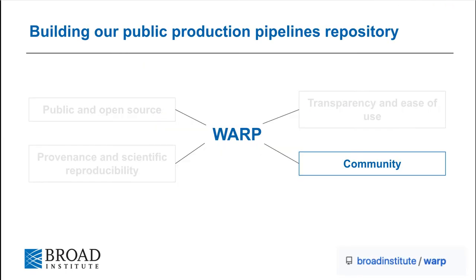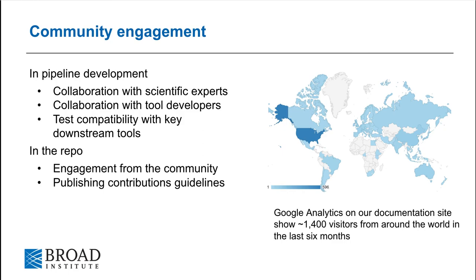Lastly, our efforts on engaging with the community. We've been working to increase our engagement with the broader community of pipeline developers and users. Each pipeline we develop is done in collaboration with a scientist or lab who is an expert in the data type, and we've worked with labs at many institutions in multiple countries. Where possible, we collaborate with tool developers to use open source tools and request features rather than build our own. Where there aren't standards and file formats, we test to confirm our outputs are compatible with popular downstream tools and published specs. As we've talked about WARP more, we've begun to receive emails, issues, pull requests, and new pipelines from folks outside of our team and the Broad. We've just published contributions guidelines for contributing to existing pipelines, including a full tutorial, and will expand this to cover contributing a new pipeline soon. Our Google Analytics on our documentation site shows 1,400 visitors around the world in the last six months, and we're eager to engage.